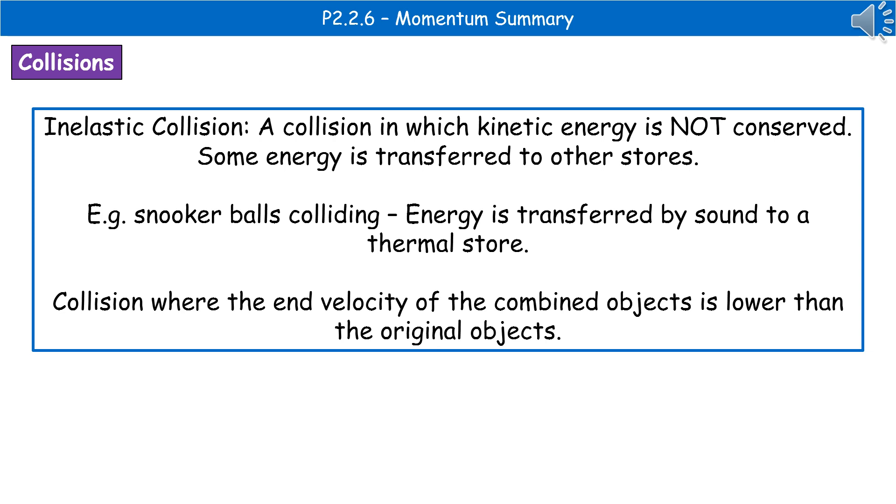Which brings us on to the other type of collision, an inelastic collision, which is where kinetic energy is not conserved. Some of the energy, therefore, is transferred to other stores. And that's our real example there of our snooker balls colliding. Some of the energy is transferred by sound to the thermal store. Therefore, not all kinetic energy is conserved, which means it's an inelastic collision. We could also see inelastic collisions as an example where the end velocity of the combined objects is lower than that of the original objects.